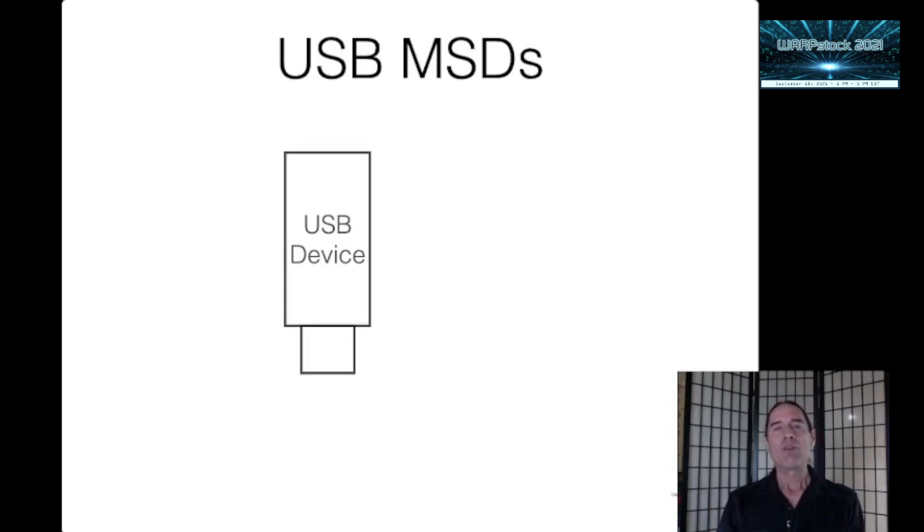Now let's talk about how USB mass storage devices work. Suppose you plug in a USB MSD — it will have at least one logical unit, but maybe more. You could have a USB stick, which is a single device with one medium permanently attached. Or you could have a four-slot card reader — it's one device that presents to the system with four logical units, and you can plug in up to four media. You could also have a two-slot disk reader presenting as one device with two logical units.